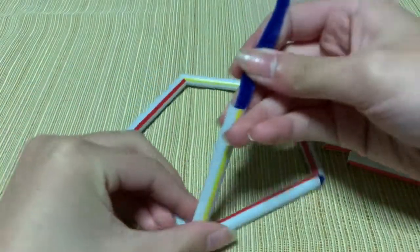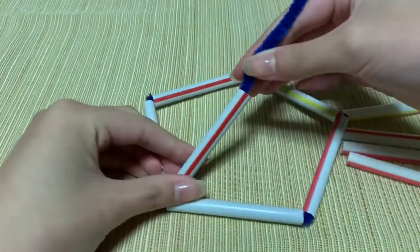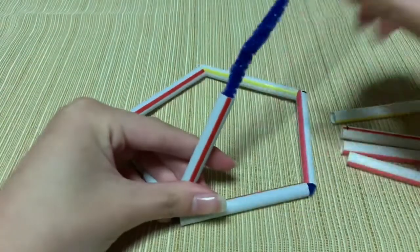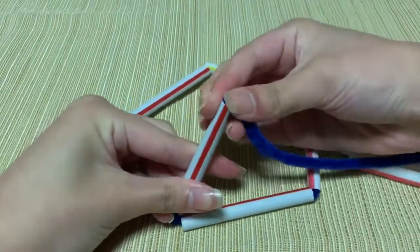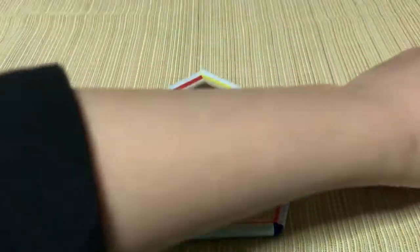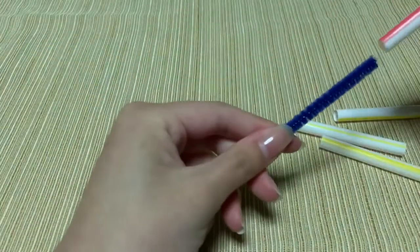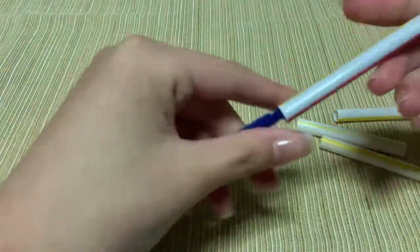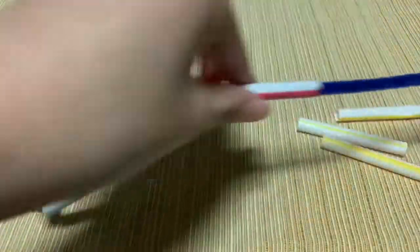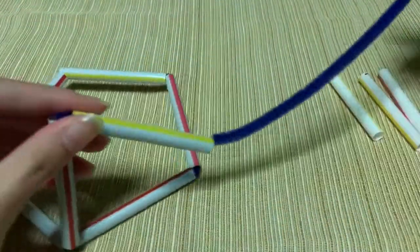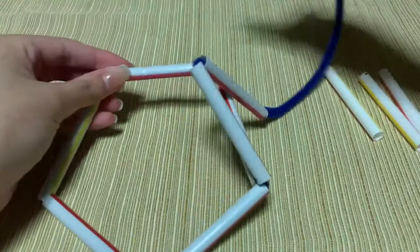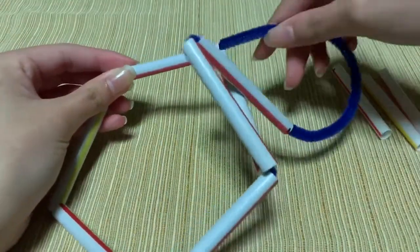Take two strut B's and thread them through. Bending the area where they meet, forming a triangle shape. Push the pipe cleaner into the closest strut A to where the last strut B is.